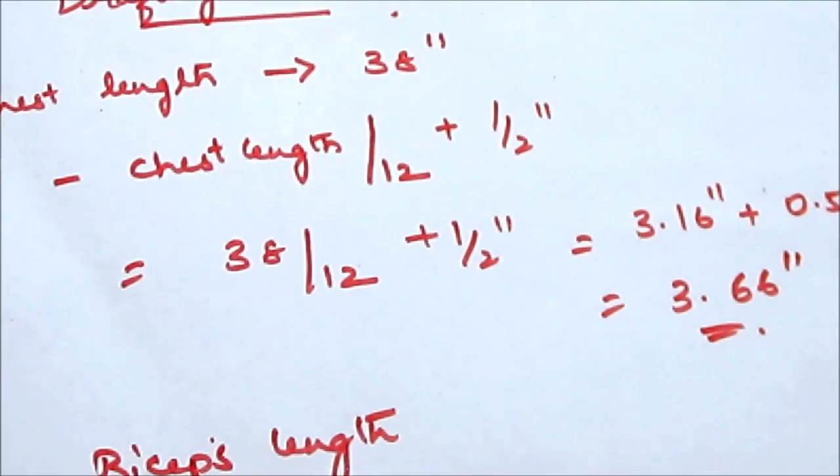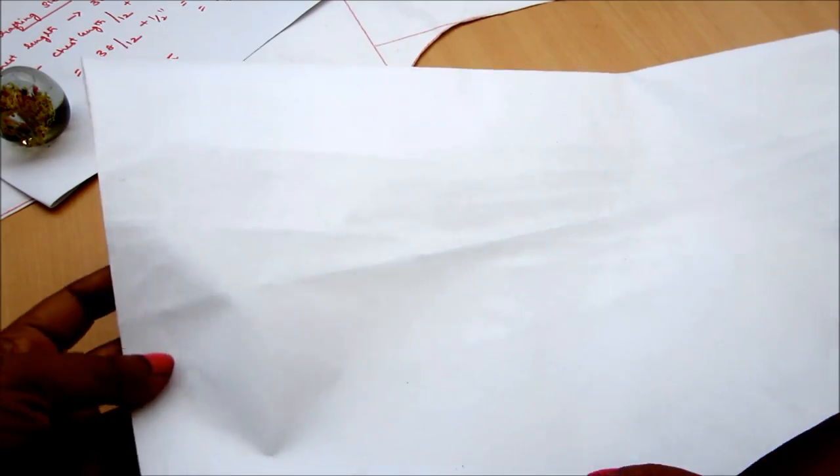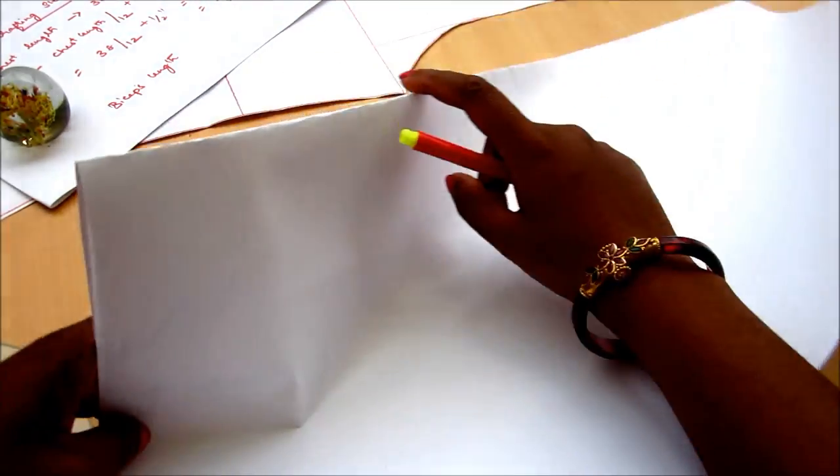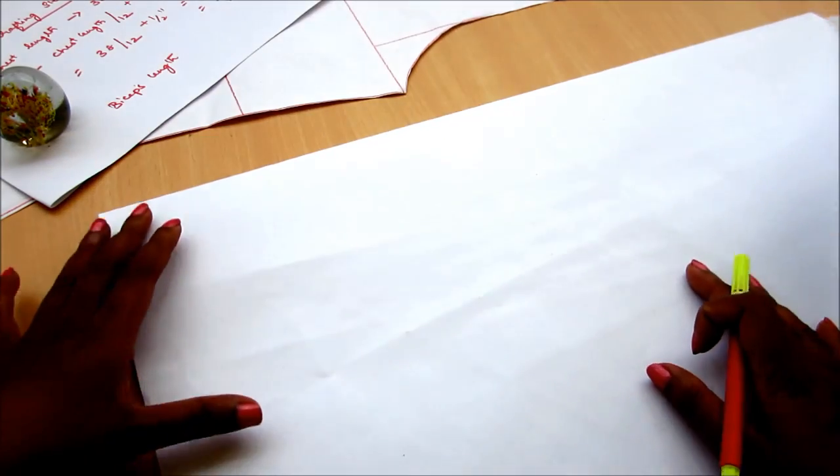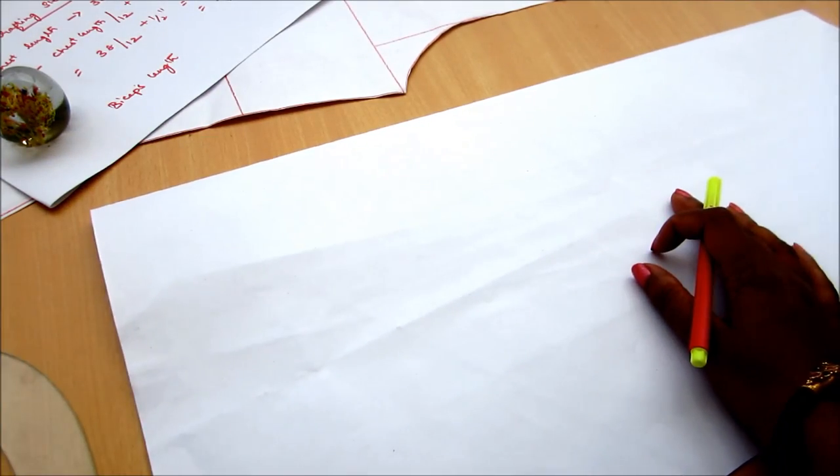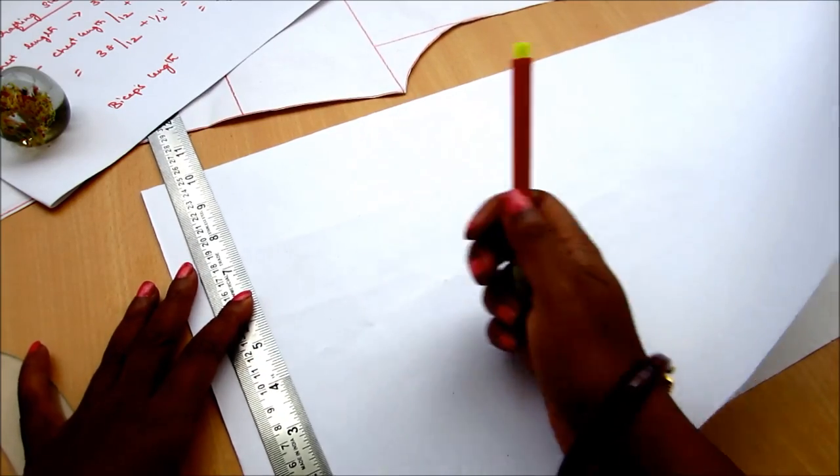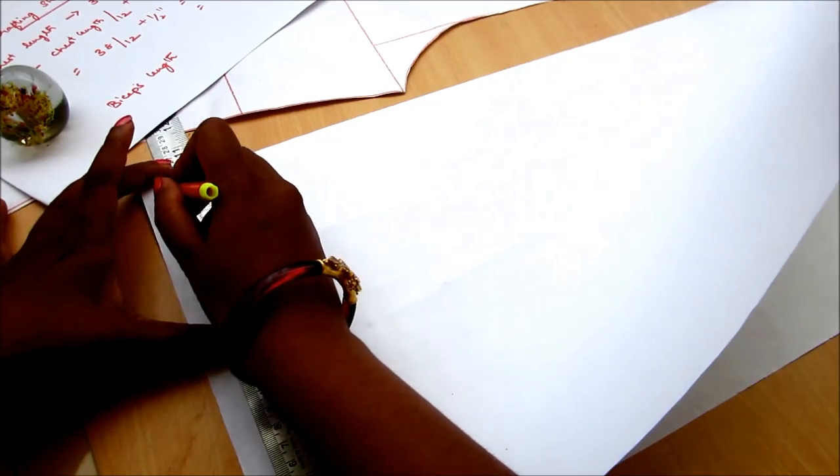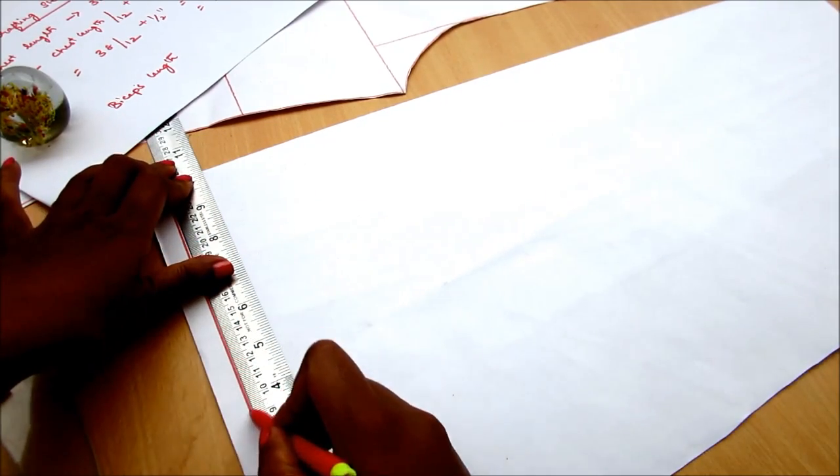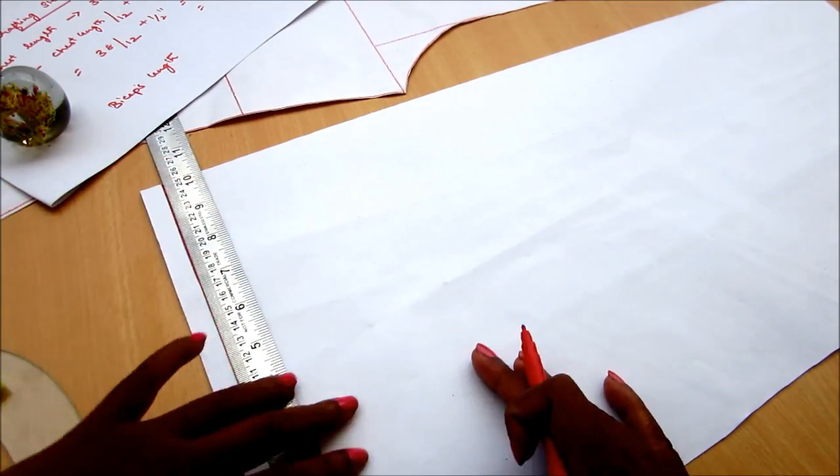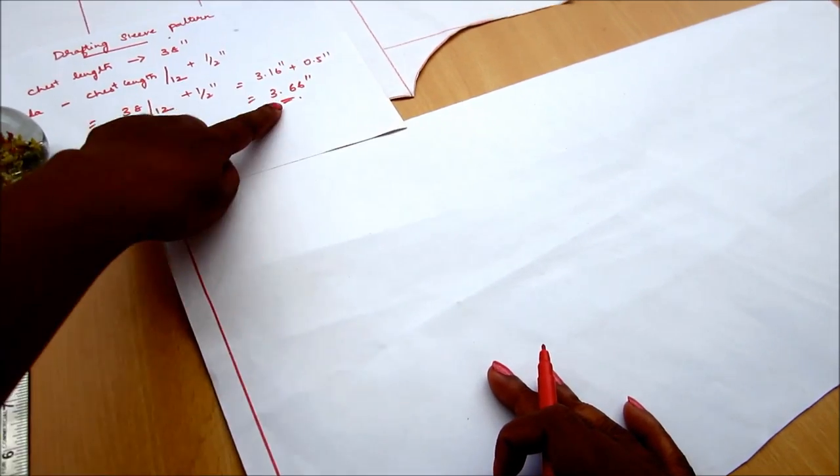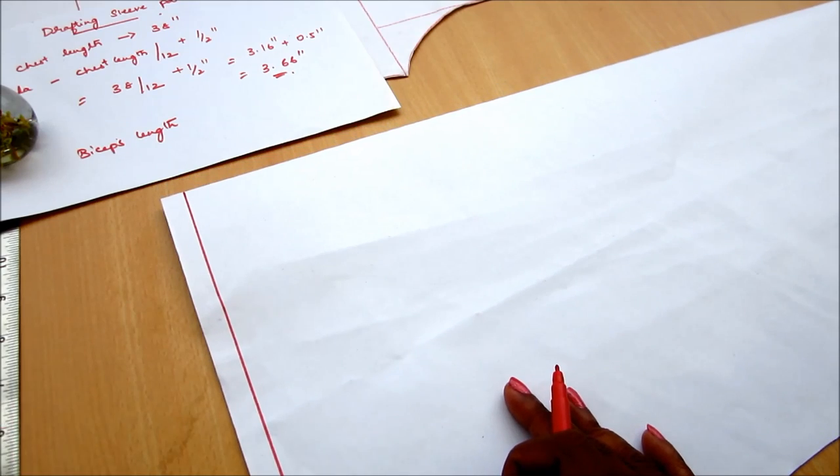Now I would be showing the construction or the draft on the chart. Supposing this is the fabric, fold it into two, that means into four layers. The fold should be on the top and give the margin line, and from this line on the folded side mark the biceps length of 3.66 inches which I've calculated.